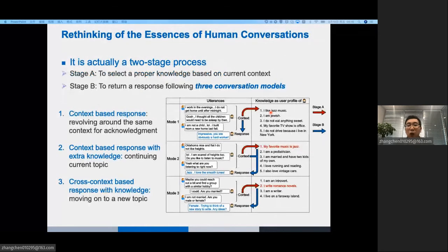Based on that, we investigate two real-world dialogue datasets and try to demonstrate the essence of human conversation. This figure shows that human produces a response in a two-stage process. First, he determines whether to use knowledge and which knowledge to use. After that, he returns a response following three conversation modes. Let's see those three modes.